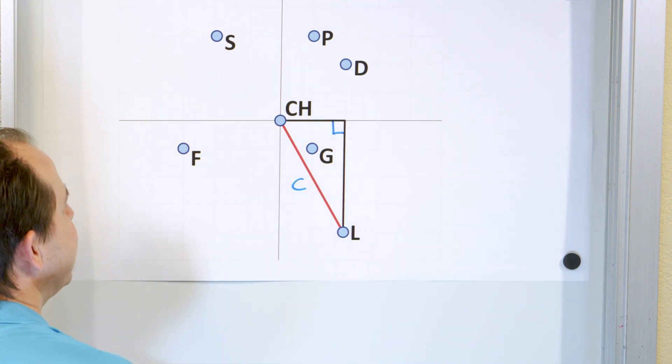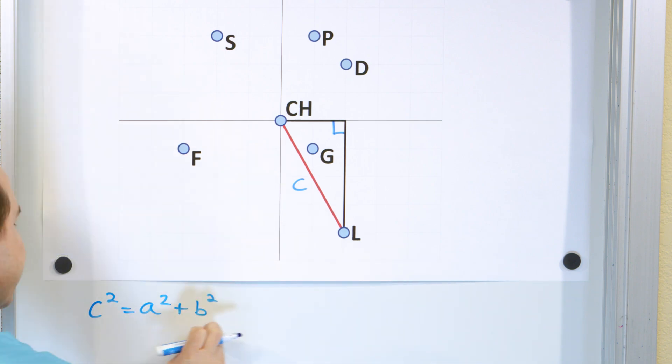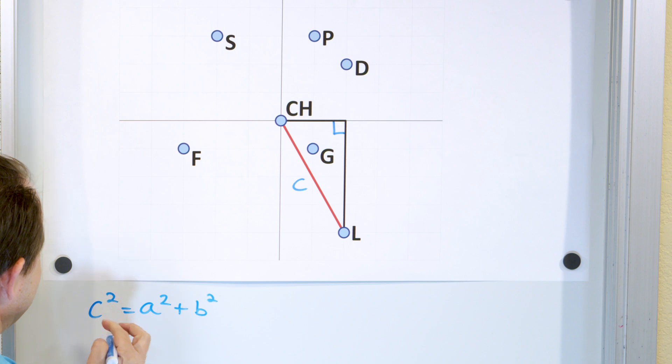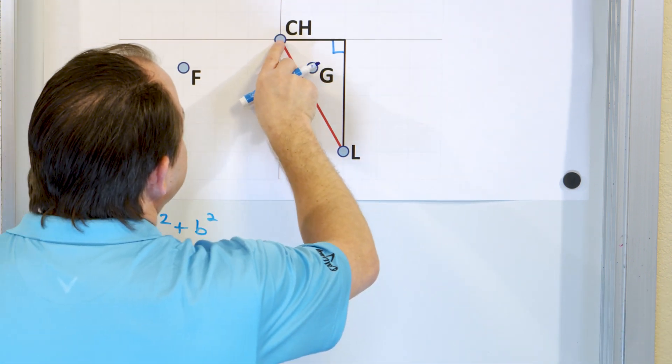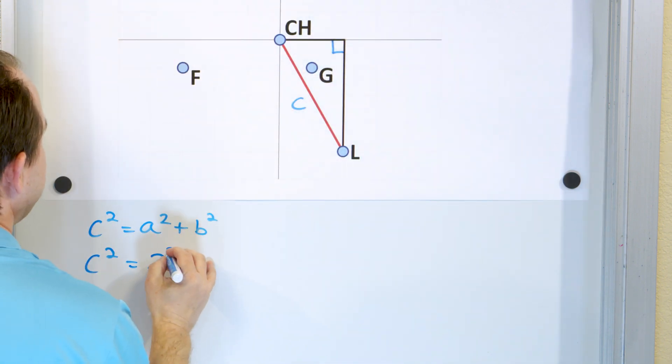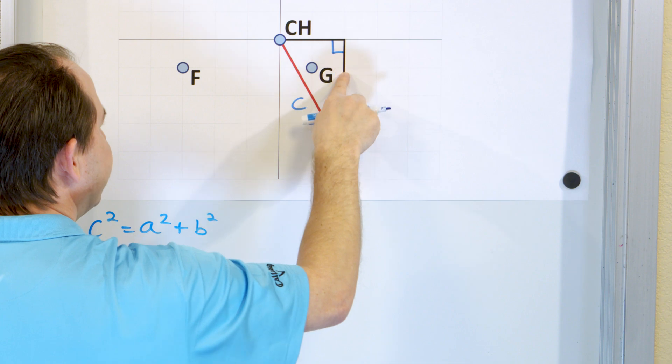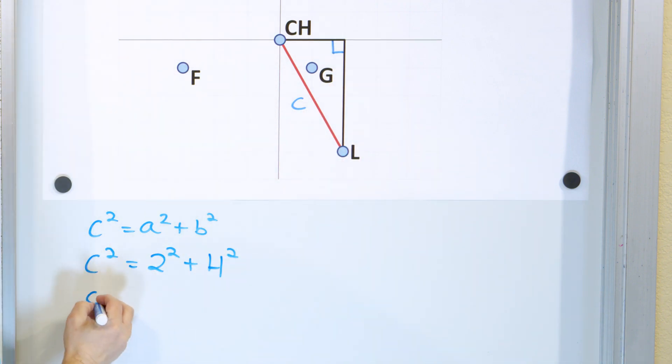And so that means this is the hypotenuse C. And we can then write that C squared is equal to A squared plus B squared. Now usually I say A squared plus B squared equals C squared, but you know you can flip things around. We're just going to write it like this from now on since we're solving for the distance C. So C squared is A, which is one side of the triangle. This is 1, 2 distance units, 2 kilometers, so 2 squared. And then this is 1, 2, 3, 4, so 4 squared.